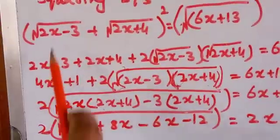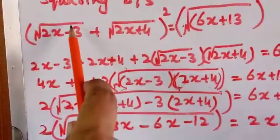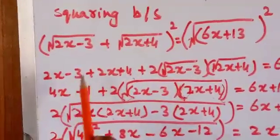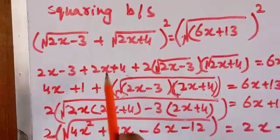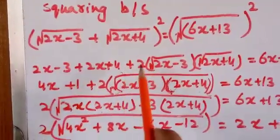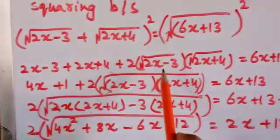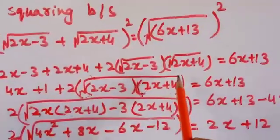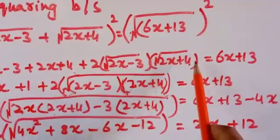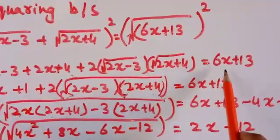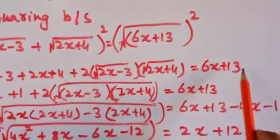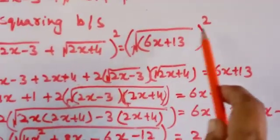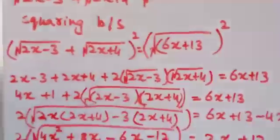Radical sign cancels out. So we get: (2x − 3) + (2x + 4) + 2·√(2x − 3)·√(2x + 4) = 6x + 13. Radical sign cancels out on the right side.